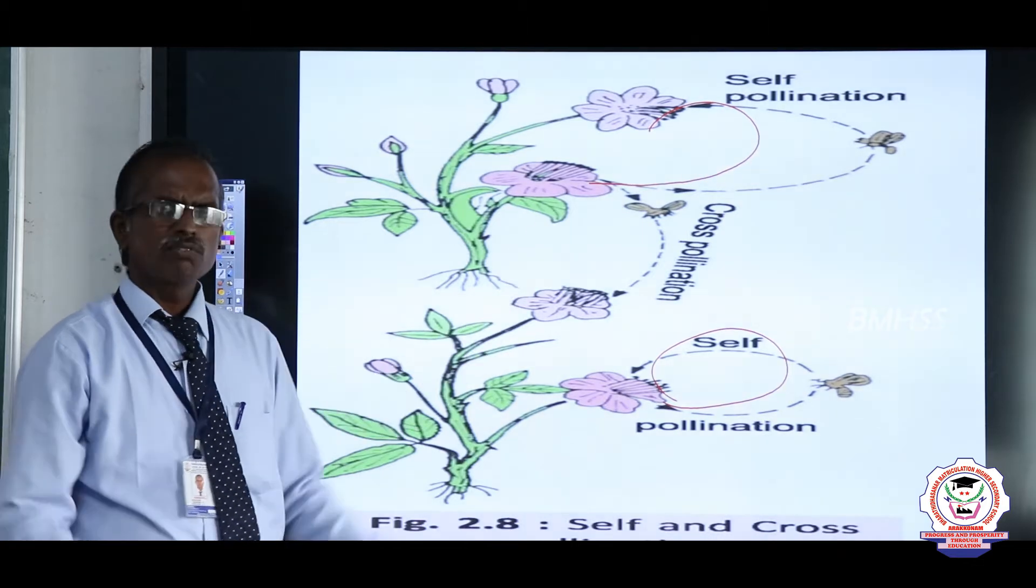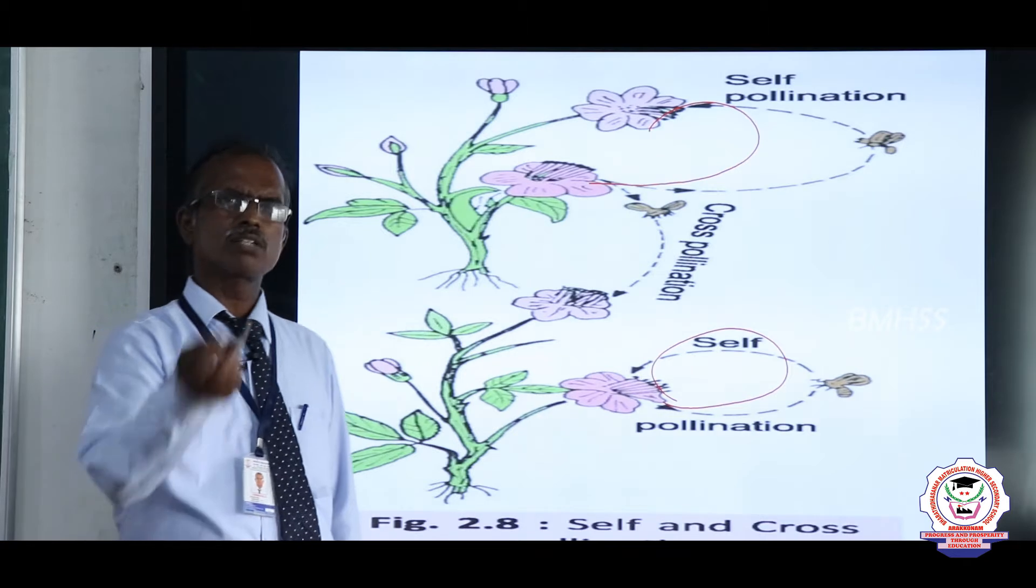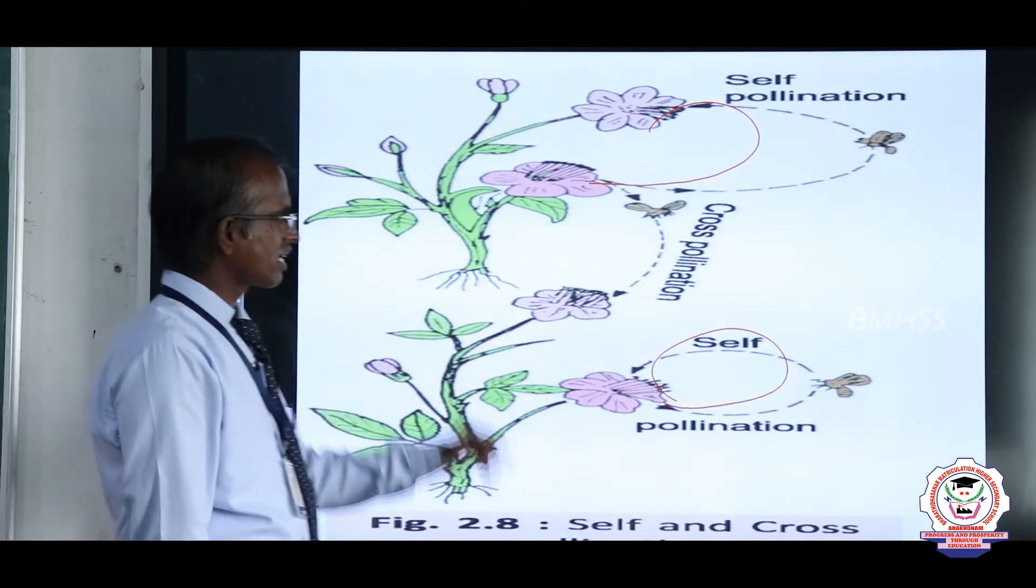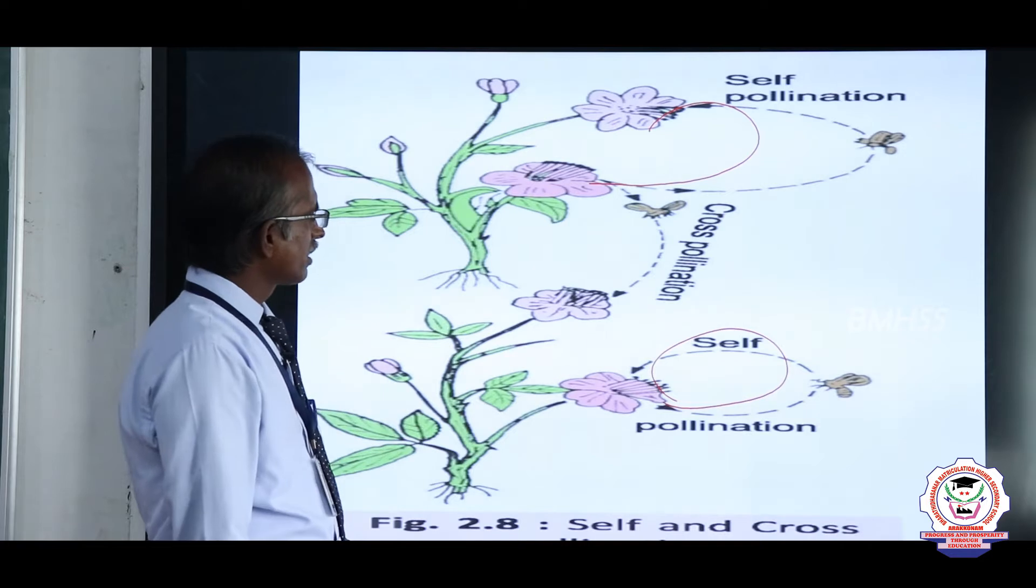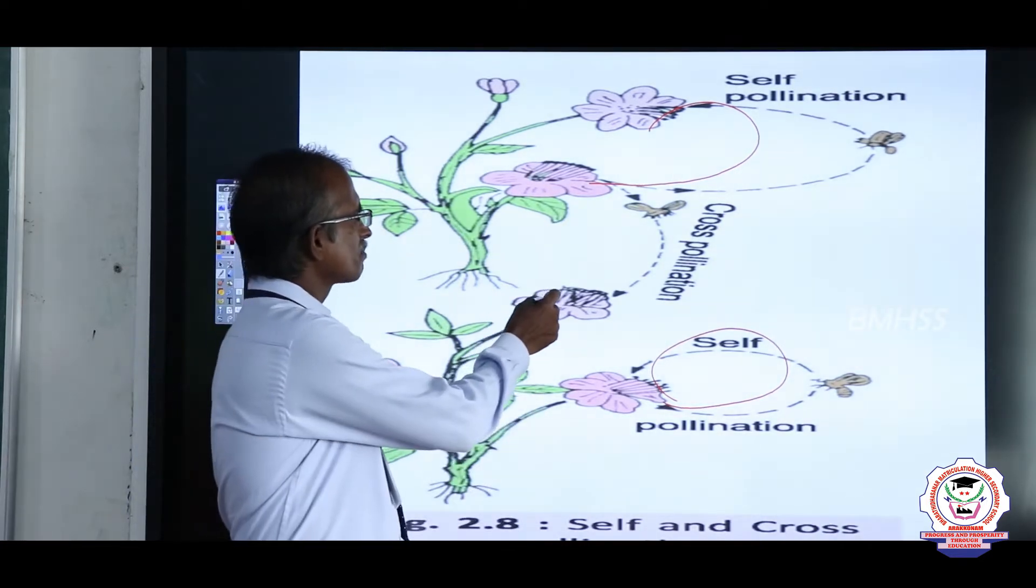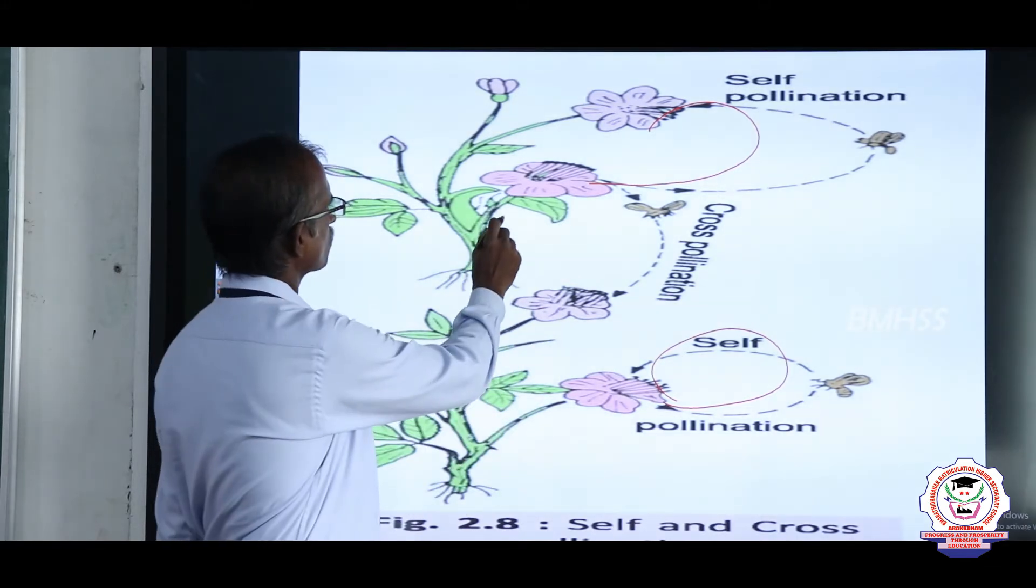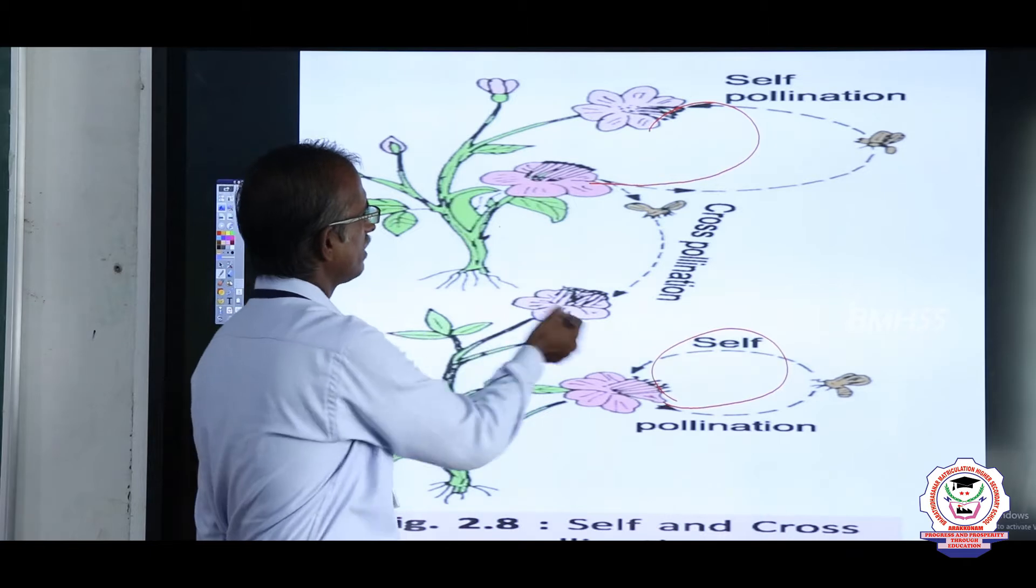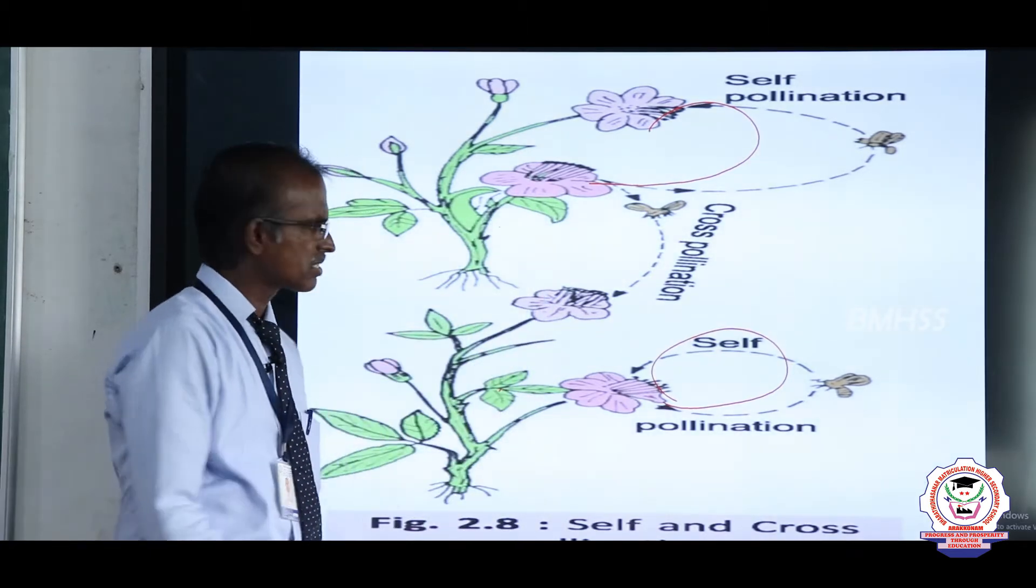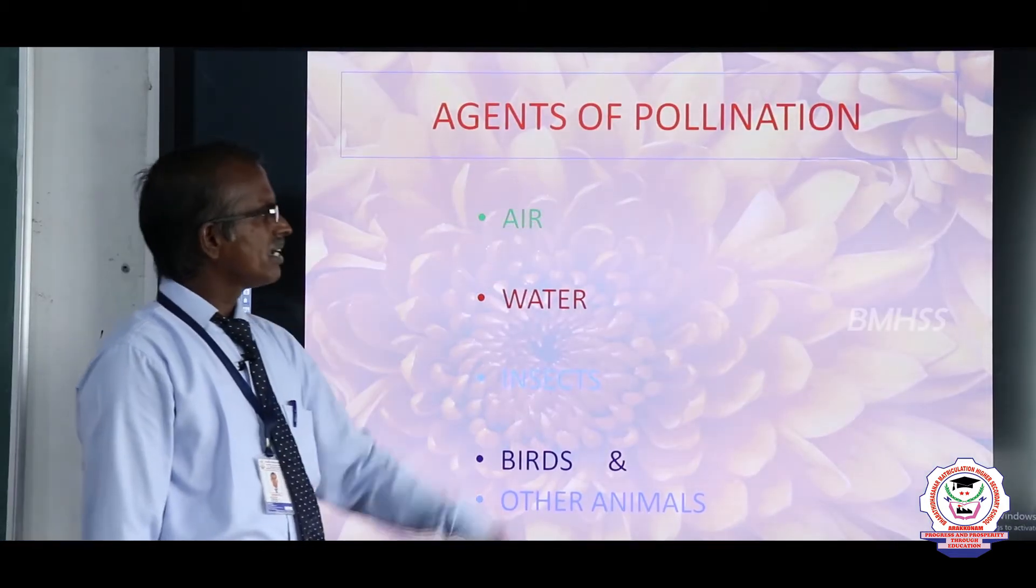The agents are very important to carry the pollen grains from one flower to another flower. In cross-pollination, the transfer of pollen grain occurs between different plants of the same species. This pollination is known as cross-pollination.